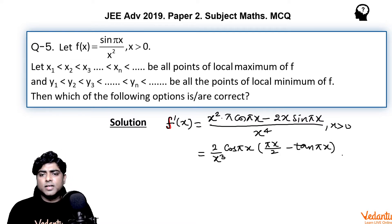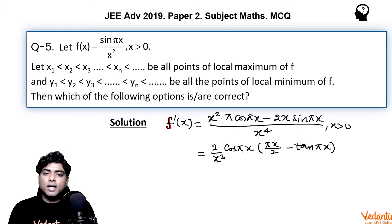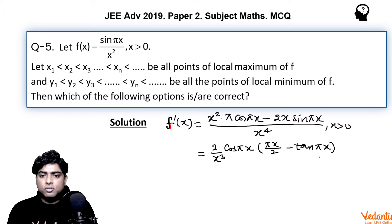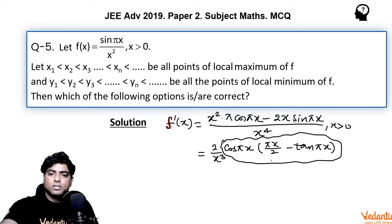The critical points occur where cos(πx) ≠ 0, since we took cos(πx) out to make the expression easier to handle. Now we need to check the sign of cos(πx) · [πx/2 − tan(πx)]. We do this graphically.